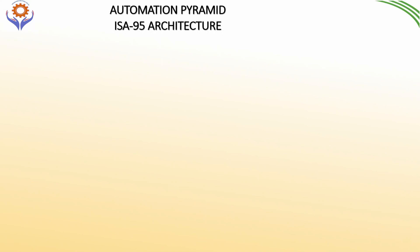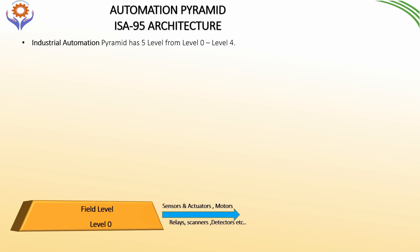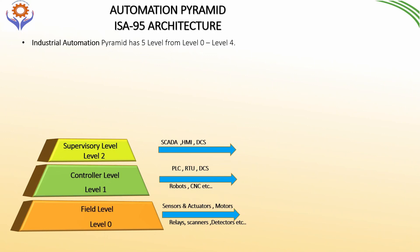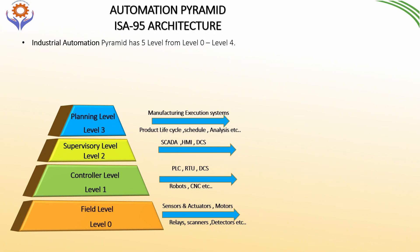The automation pyramid has five levels, from level zero to level four. Level zero is the field level or production level, which consists of sensors, actuators, motors, relays, etc. Level one is the controller level, which consists of PLCs, RTUs, DCS, robots, etc. Level two consists of HMI and SCADA, called the supervisory level. Level three is the planning level, covering MES, product lifecycle, schedules, and analysis. Level four is the management level, consisting of ERP systems for planning and business analytics.